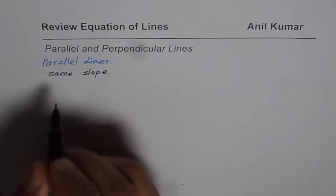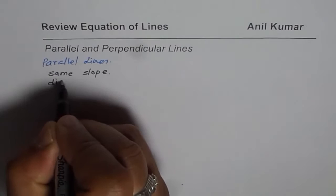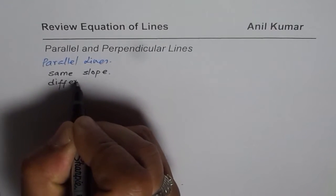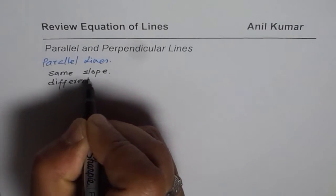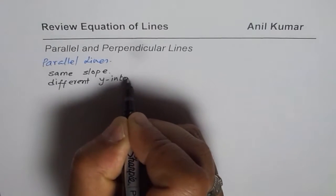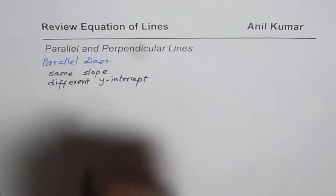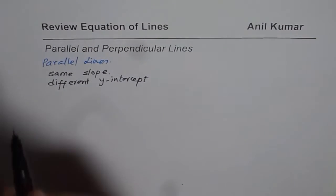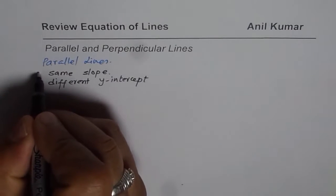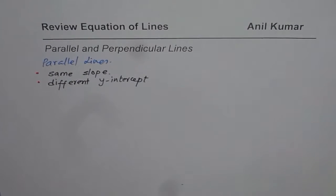Is that all? They should also have a different y-intercept. So these are the two properties. Whenever you are talking about parallel lines, we are talking about lines with same slope but different y-intercept.